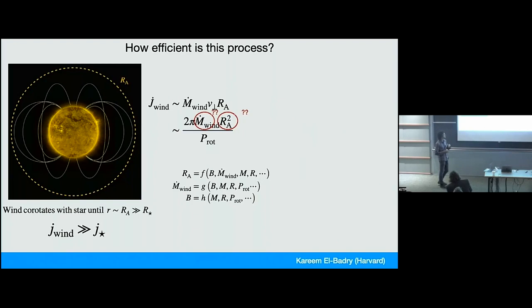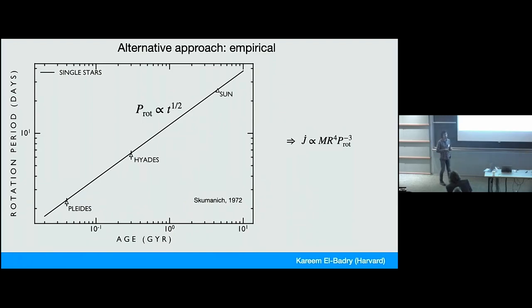And so for most of the historical modeling of CVs, people have just said, this is too complicated. We have too many parameters we don't know. Instead, let's just try for an empirical solution, which is we can look at how fast single stars are spinning down.